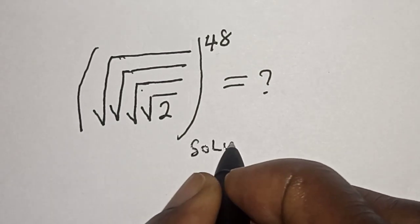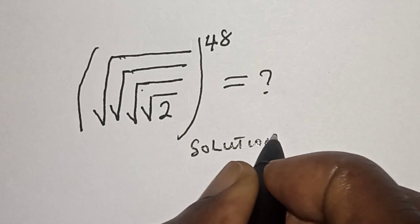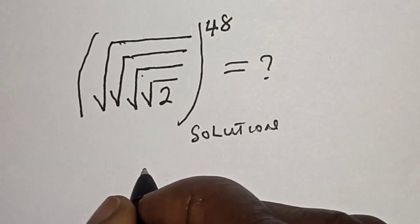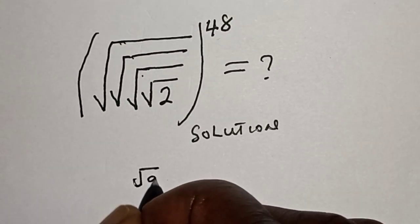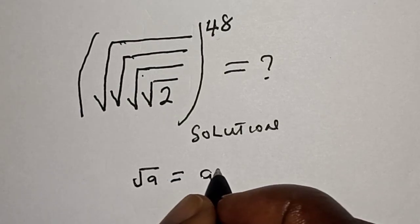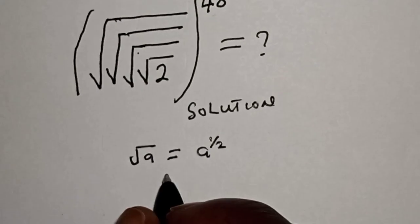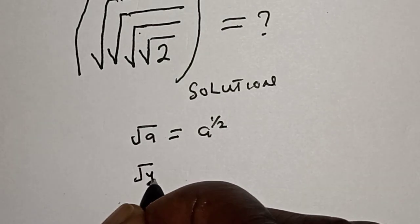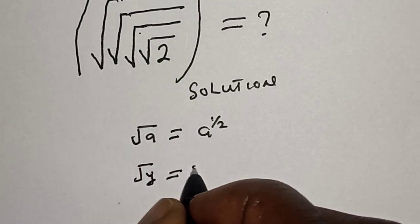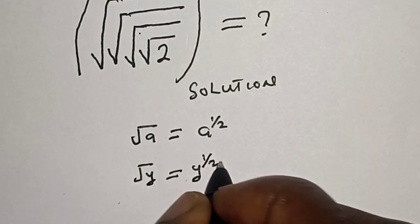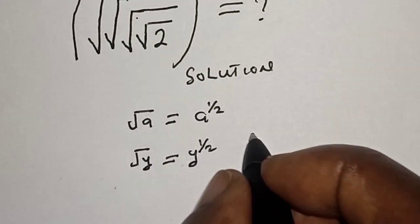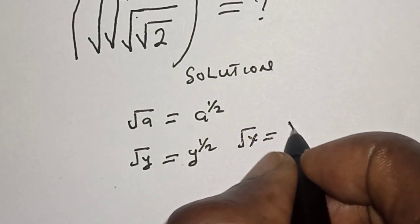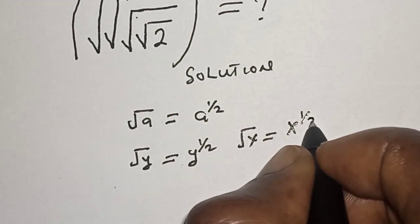Solution. Now, remember this: if you have root A, this is equal to A raised to the power of 1 over 2. Also, if you have root Y, this is equal to Y raised to the power of 1 over 2. And if you have root X, this is equal to X raised to the power of 1 over 2.